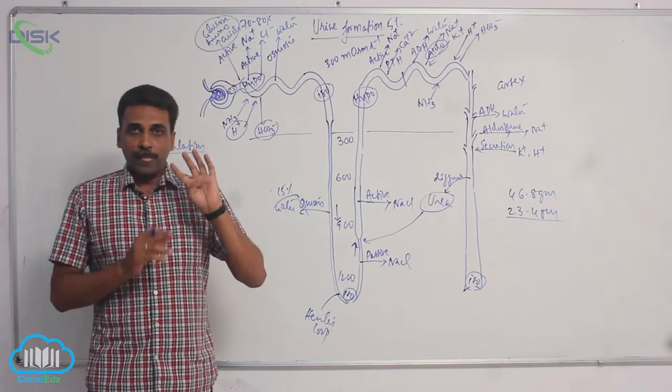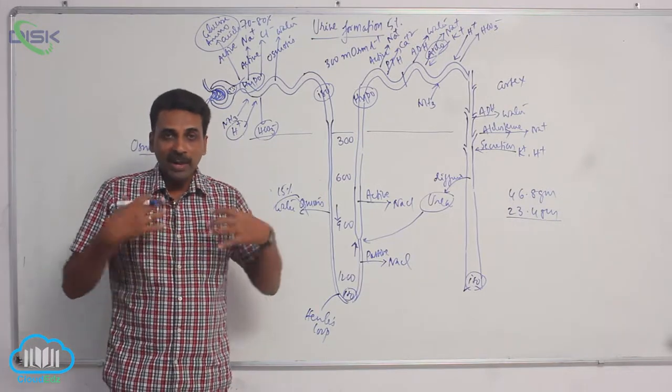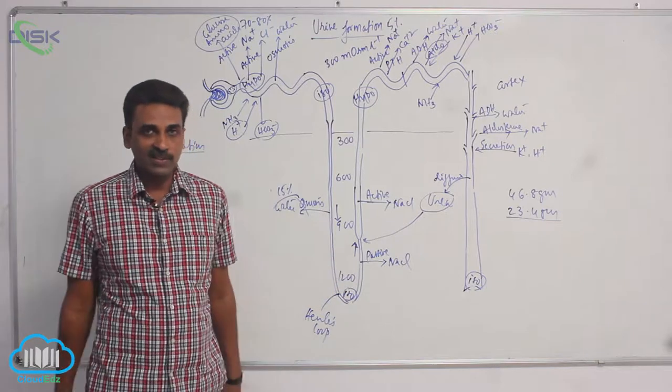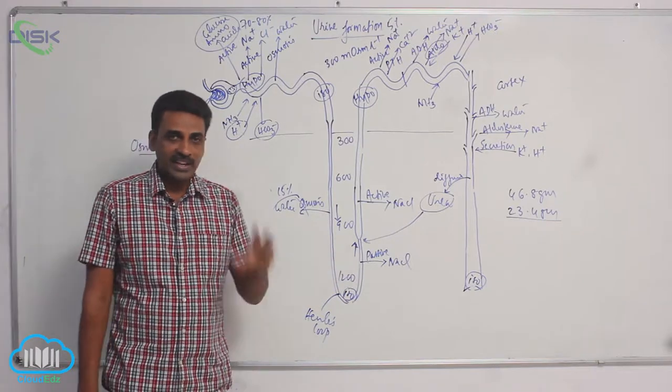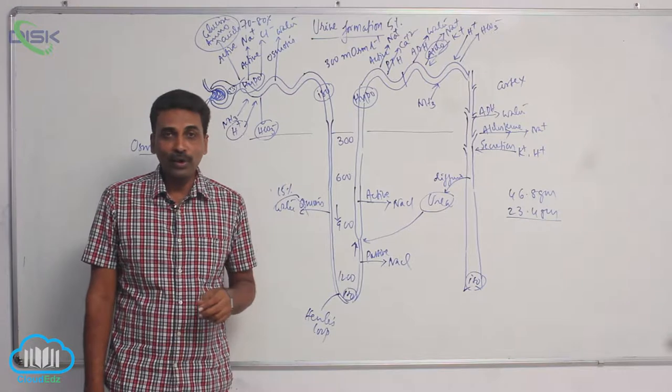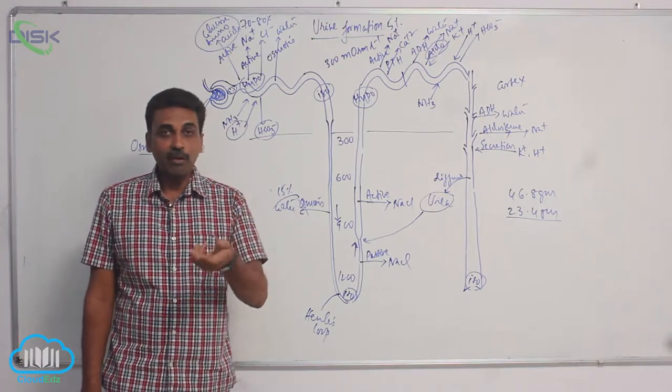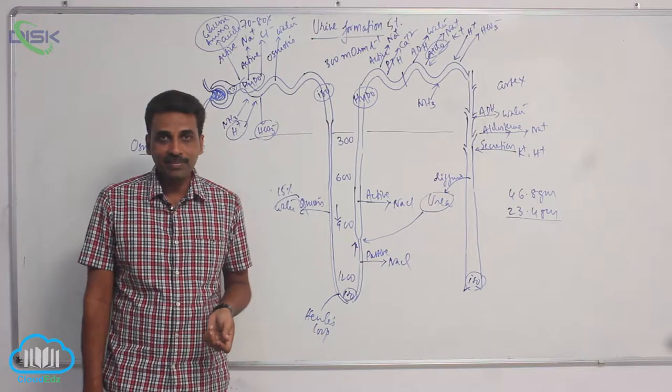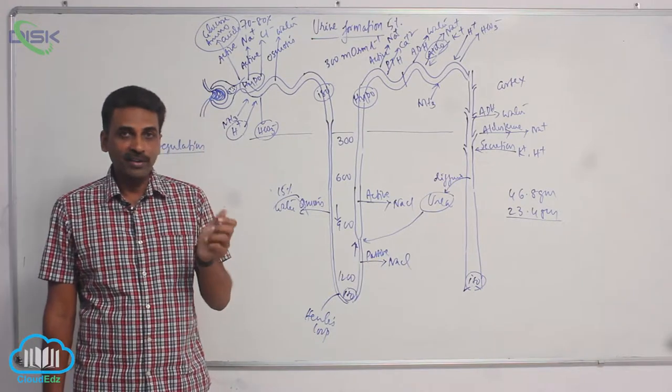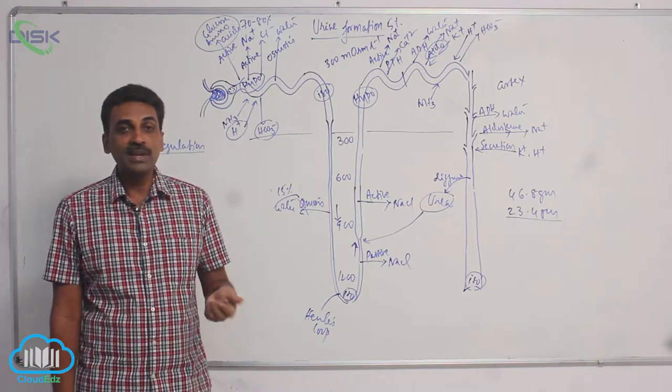So the kidneys are maintaining acid-base balance by pushing out extra H plus ions. The kidneys also produce erythropoietin, a hormone which is useful for formation of red blood cells. Erythropoietin hormone which produces red blood cells.